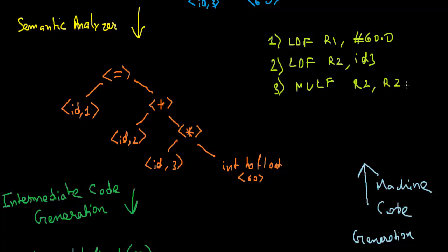The result will be stored in r2. For addition, load will be r3 ID 2. Now 5th, we will add R3 and R2 and we will store in R3, and finally we will store here ID 1 and R3.